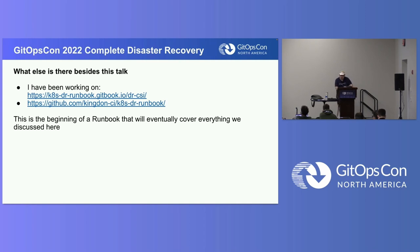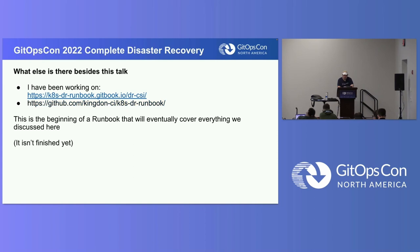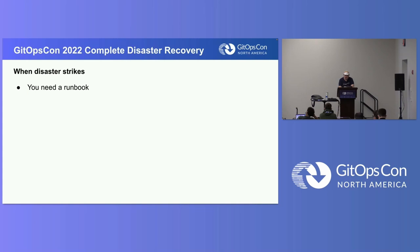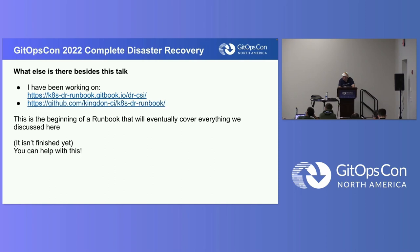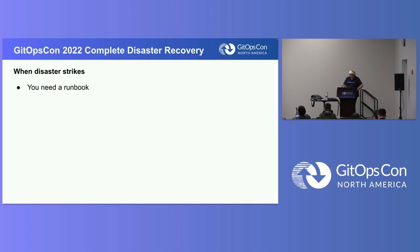There's some documentation I've been working on to go with this talk — a disaster recovery runbook. This is the beginning of a runbook that will eventually cover everything we've discussed here and more, but it needs some work yet. I don't think I can do this by myself — but you can help. Get used to saying that: you need help, I need help, future you needs help from present you. If you need help, you know where to find us — we're in the CNCF Slack. I'm Kingdon B, and I'm usually in the Flux channel.